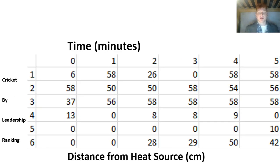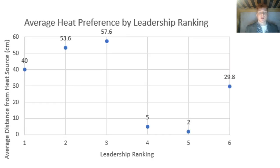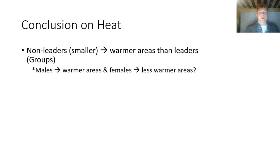However, when in groups we see much different data. In groups we can see as leadership ranking increases, the distance from the heat source decreases. That is again shown very clearly with this drop-off amongst non-leaders. So I can conclude that non-leaders or smaller crickets tend to stay in warmer areas than leaders or larger crickets when in groups. And again I would assume that the smaller crickets are more likely males. So maybe the males are staying in warmer areas and the females are staying in less warmer areas.